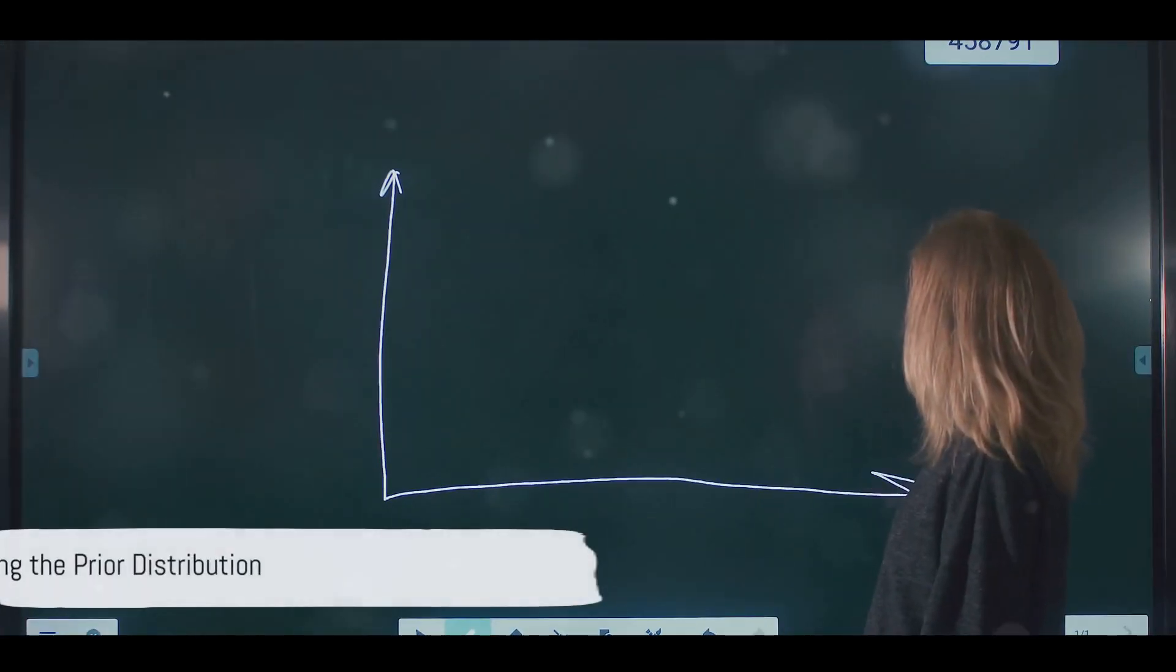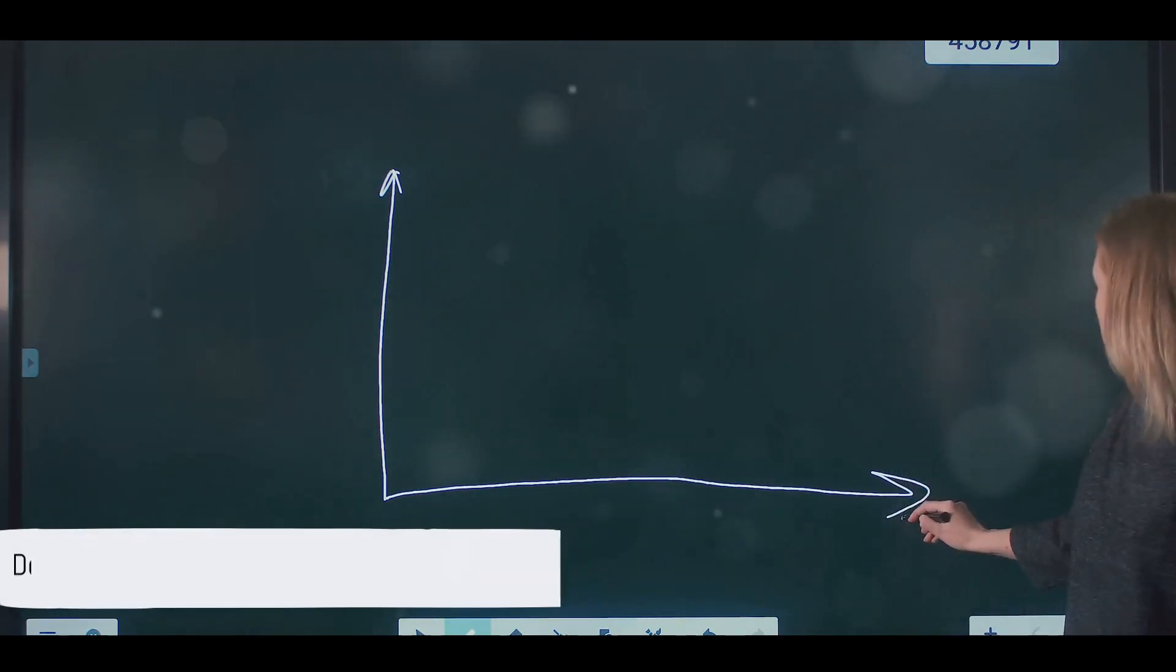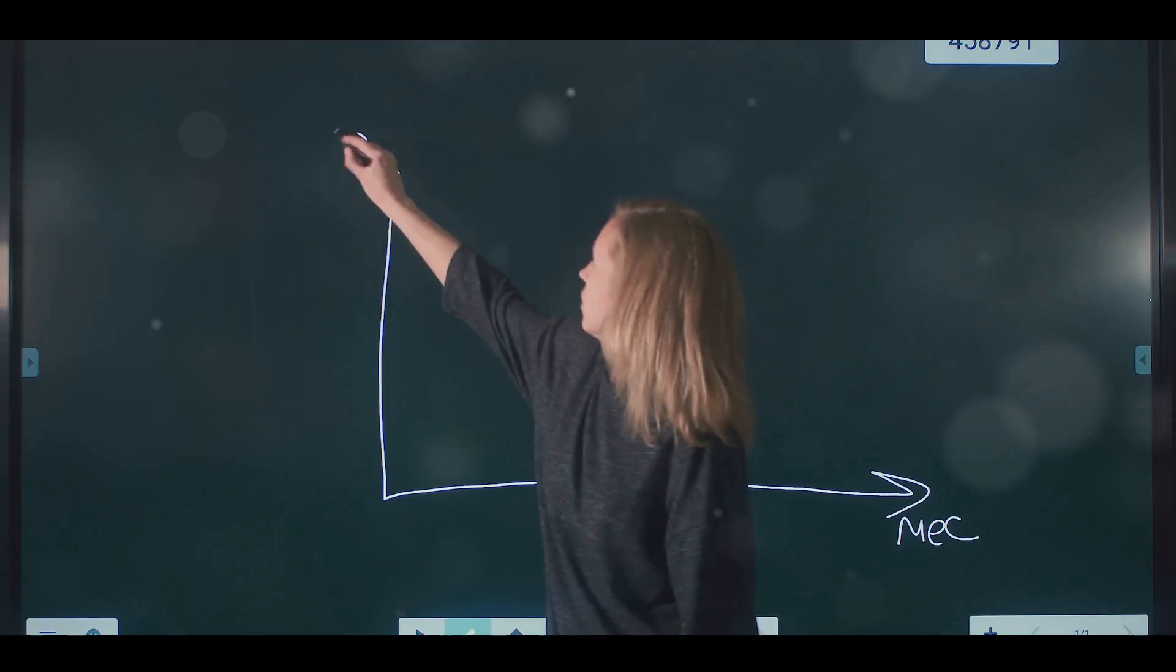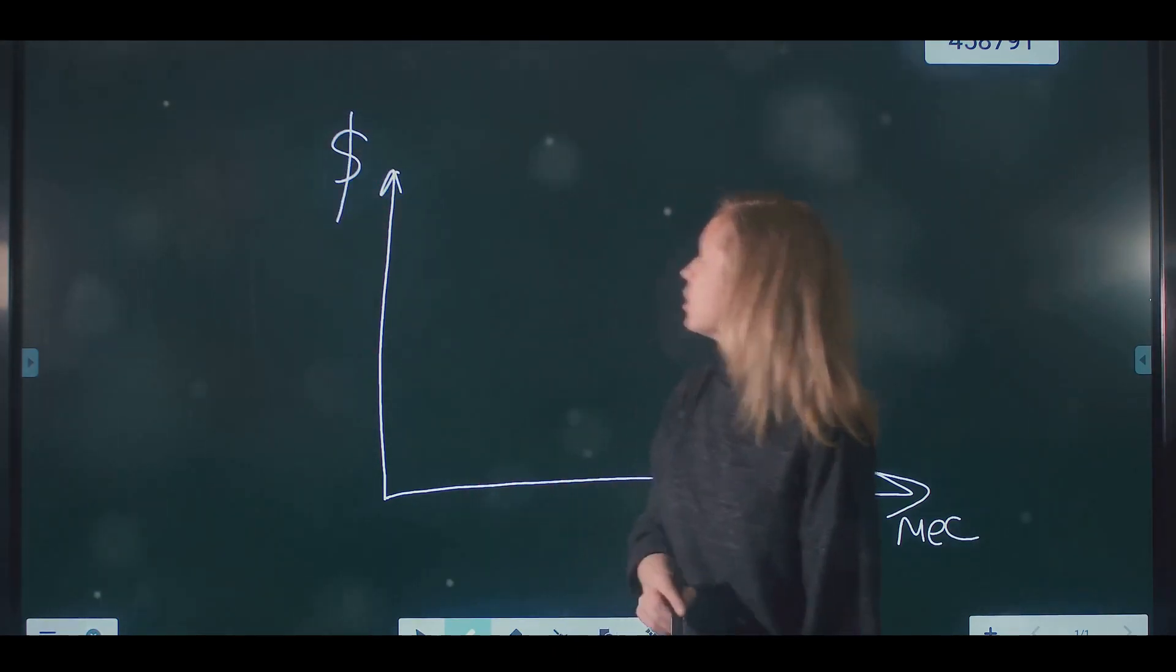This is the first step in Bayesian linear regression, defining the prior distribution. This distribution represents our belief about the parameters before we've seen any data.